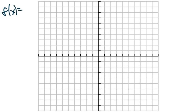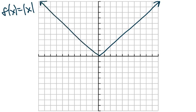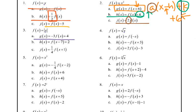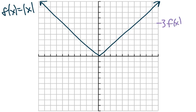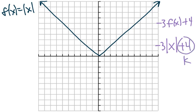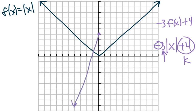Next up, f(x) = absolute value of x — that's going to look like a v shape; there's our parent graph. Now we've got a couple things happening for part a: negative 3 f(x) + 4, which in other format would be negative 3 times the absolute value of x plus 4. The plus 4 is outside the parentheses, so k — it's going to bump it up 4. That's our vertex. But we're not just doing that: this negative reflects it, and it's also a 3, which means it's going to have a vertical stretch, so it's going to be a lot skinnier by 3.